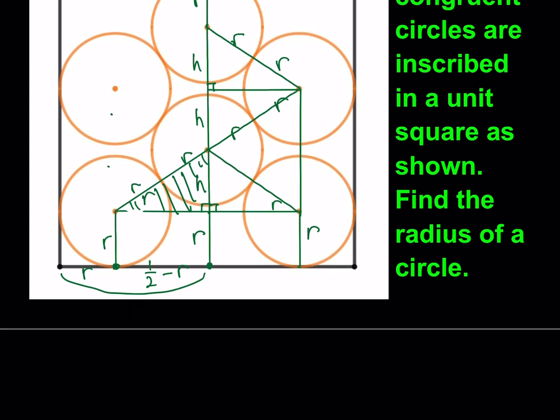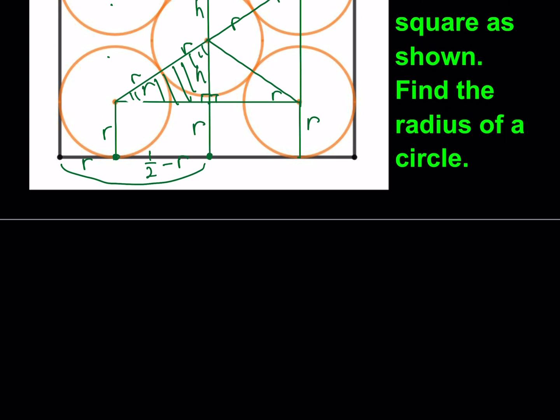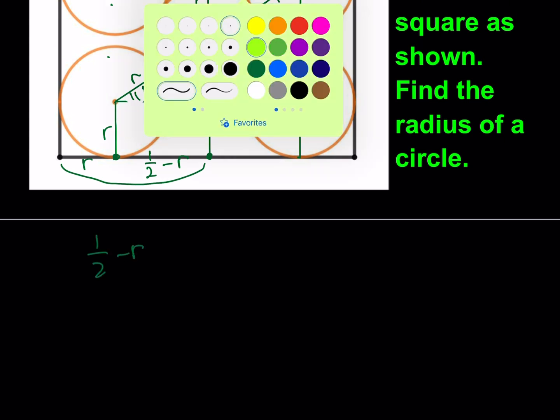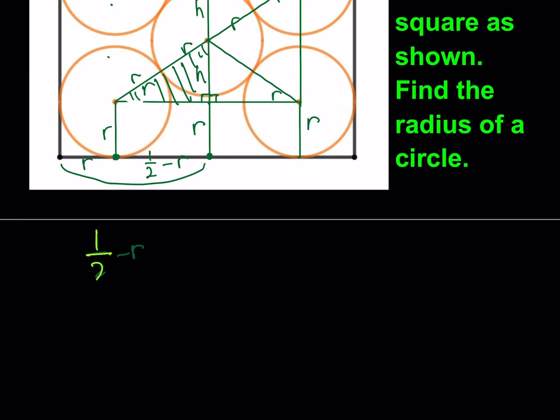Let's start by using the Pythagorean theorem. What do I have? I have one half minus R. One half minus R squared plus H squared is equal to 2R quantity squared. So this is the first part.